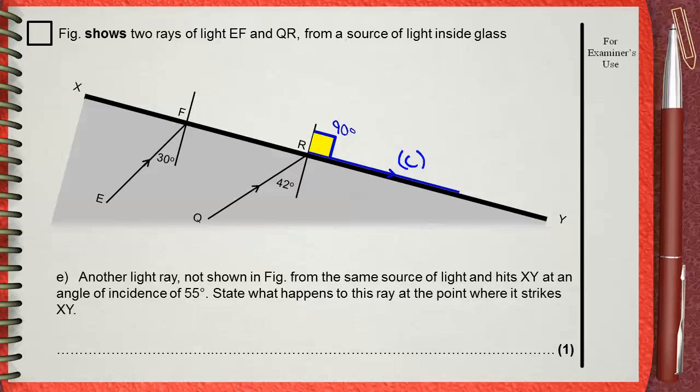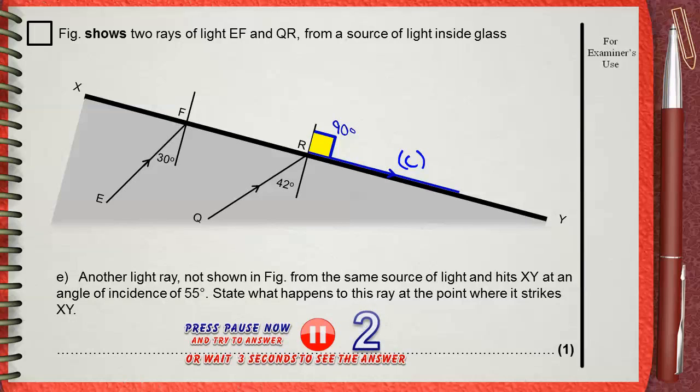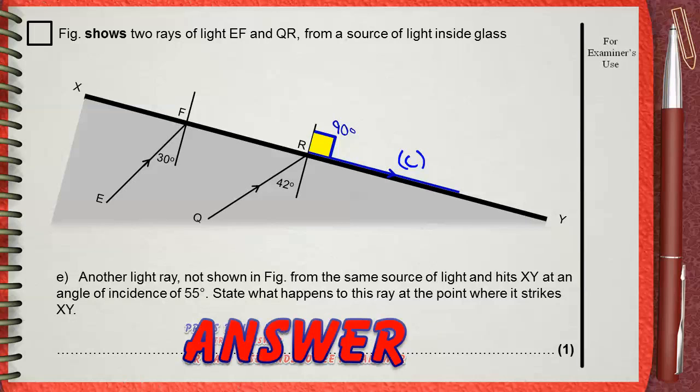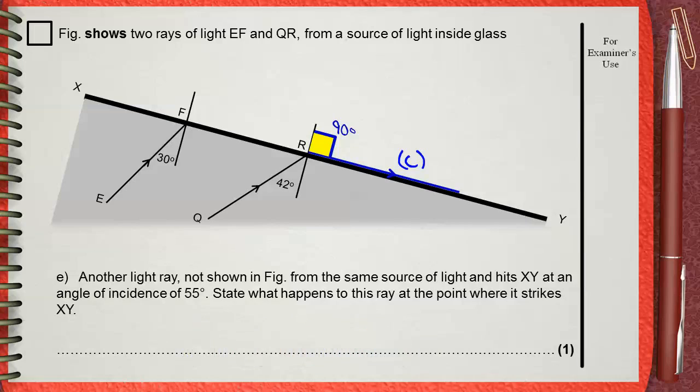Another light ray not shown in figure, from the same source of light and hits XY at an angle of incidence of 55 degrees. State what happened to this ray at the point where it strikes XY. Now, in the previous question, we said that when the light ray, like QR, is incident from the denser medium,